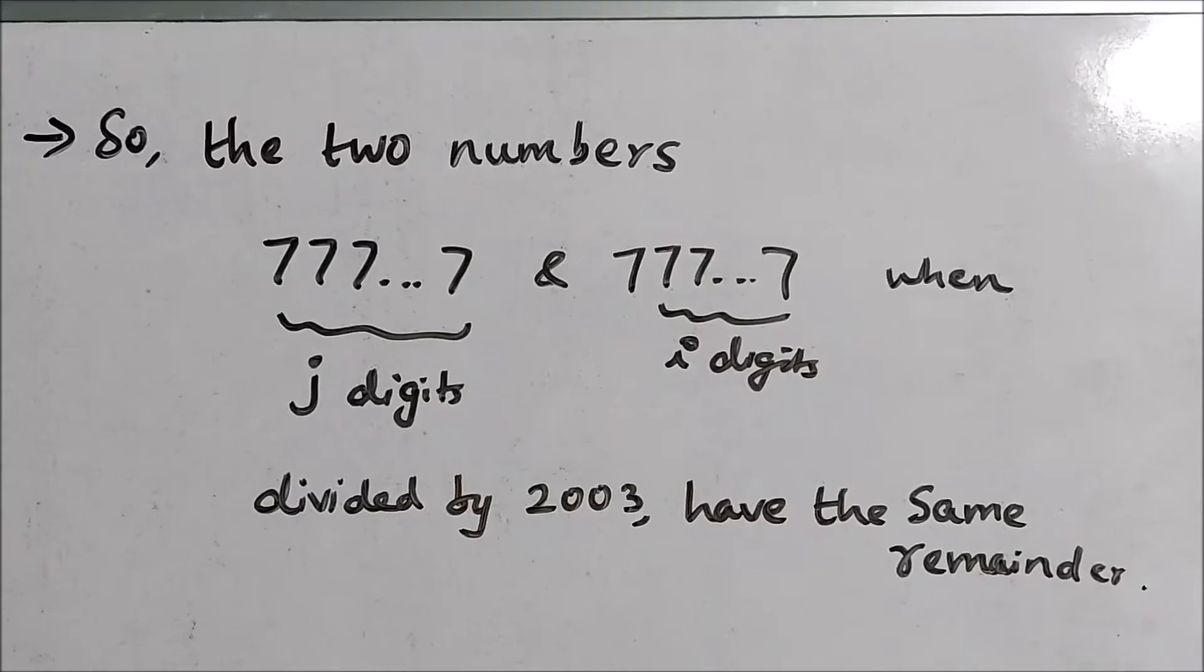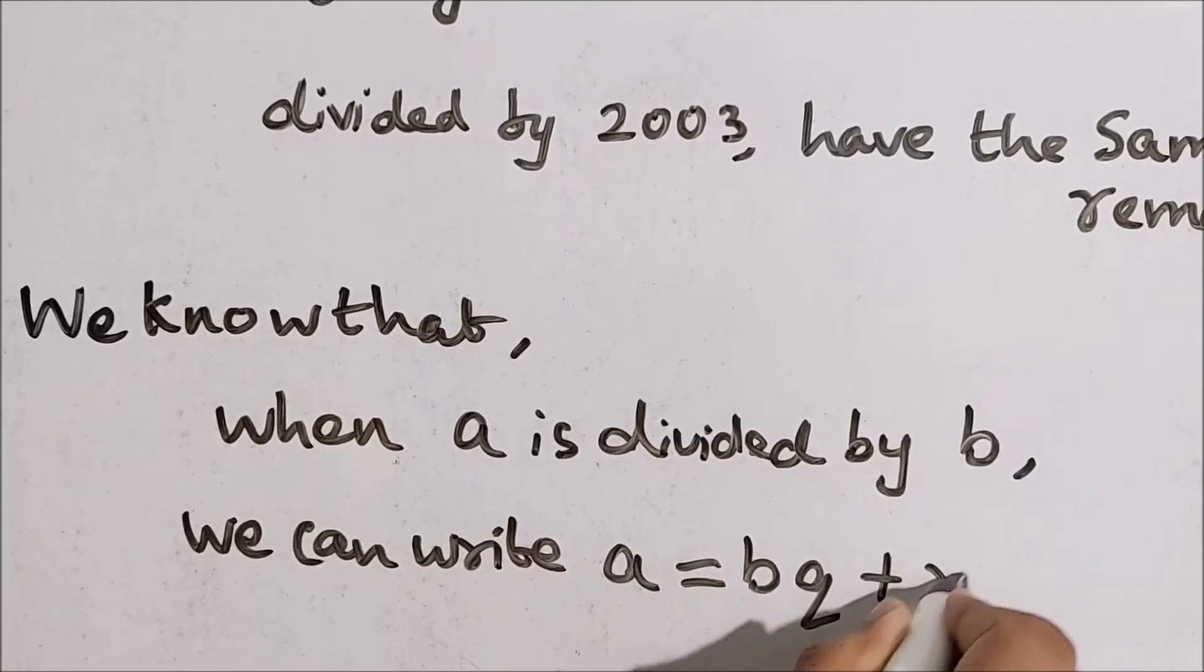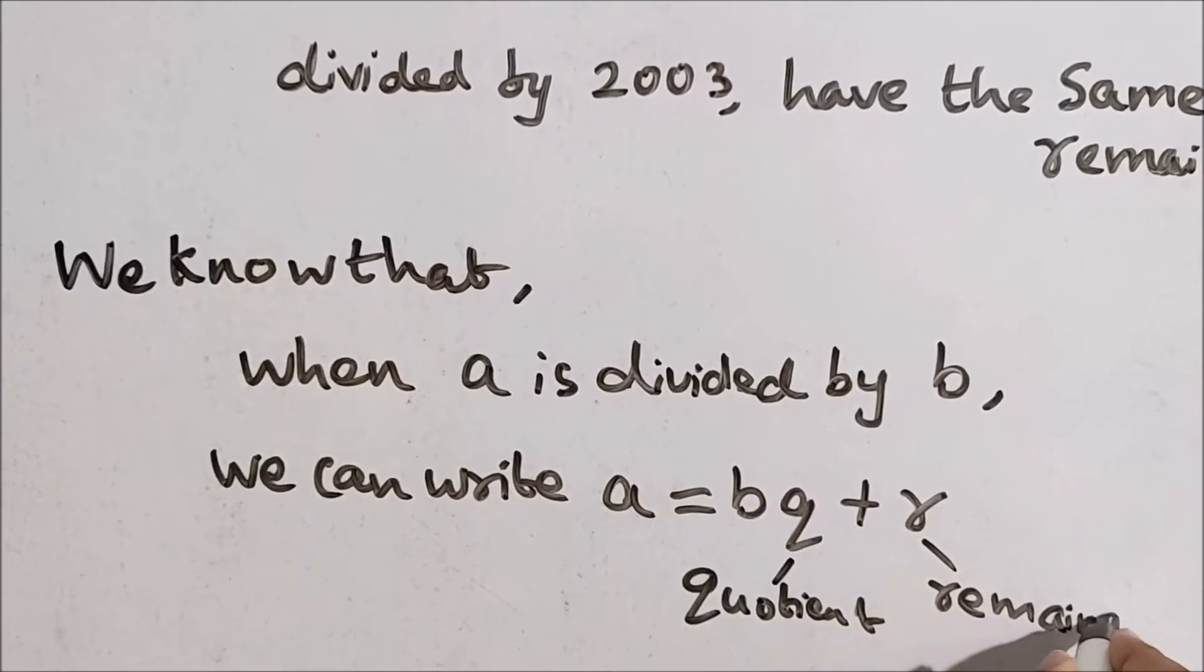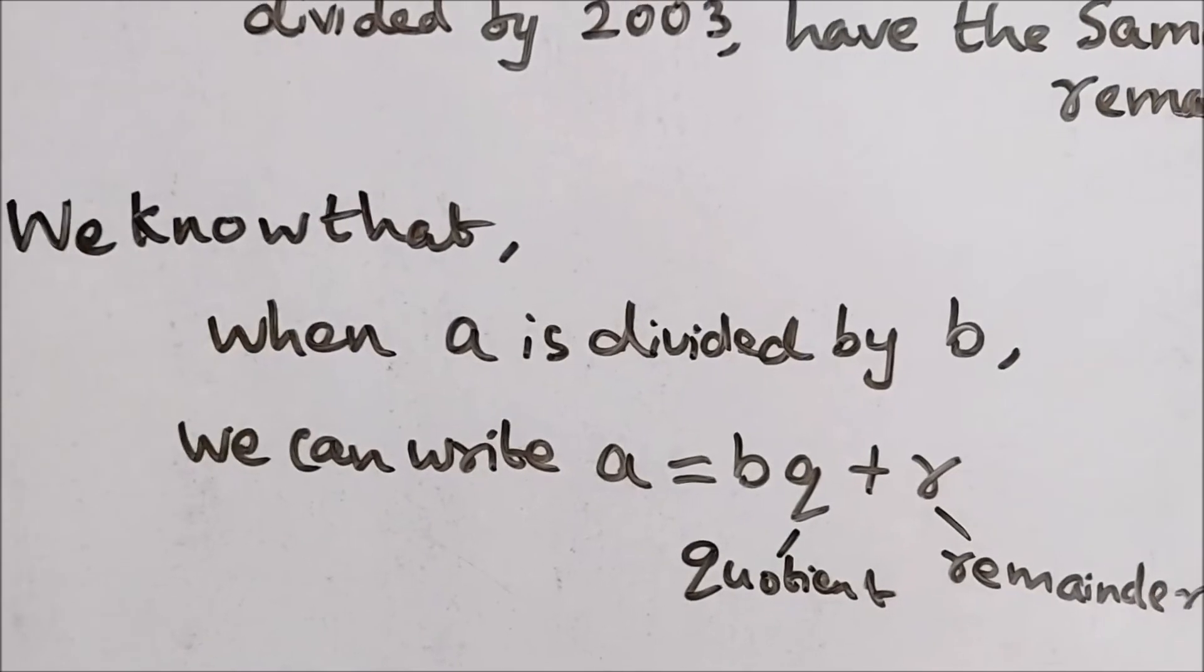We know that when a is divided by b, we can write a equal to bq plus r where q is the quotient and r is the remainder. So using this fact, we get the first and second equations.